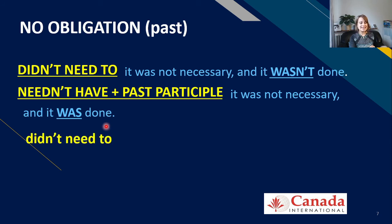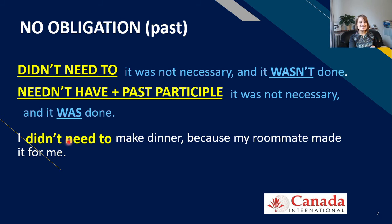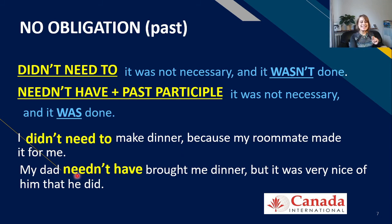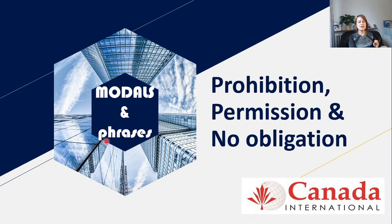For example: 'I didn't need to make dinner because my roommate made it for me' — it was not necessary and it was not done. But 'My dad needn't have brought me dinner, but it was very nice of him that he did' — it was not necessary, however he did it anyway. That's a brief summary of modal verbs and phrases for prohibition, permission, and no obligation. If you like the video, give it a like and subscribe to our YouTube channel. Goodbye, take care!